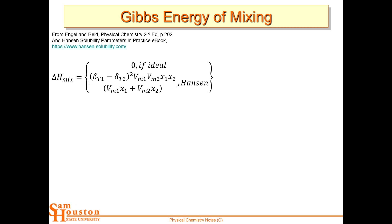You can use the Hansen solubility parameters to calculate the delta H for what they call regular solutions or non-ideal solutions. Those delta terms are the Hansen solubility parameters, X1 and X2 are mole fractions, and V1 and V2 are molar volumes. We're not there yet, so let's stick with the ideal case — no intermolecular attraction differences on mixing.